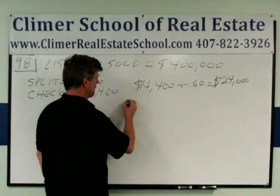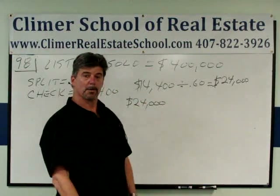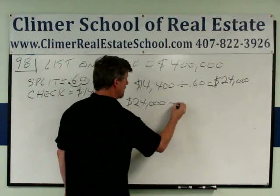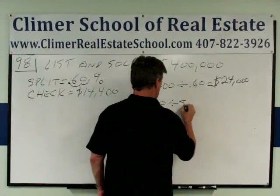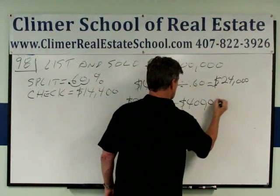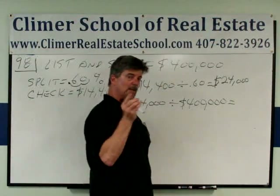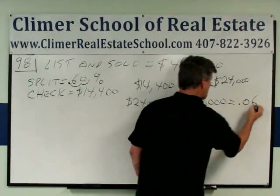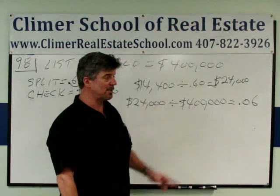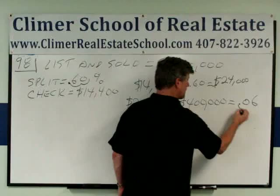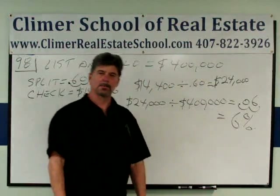What was the total commission percentage? The commission amount divided by the total sales price: $24,000 on a sale of $400,000. When you put that into your calculator, you get 0.06. Now you've got to turn that decimal into a percentage — instead of going to the left, you go to the right two spots. That's a commission rate of 6%.